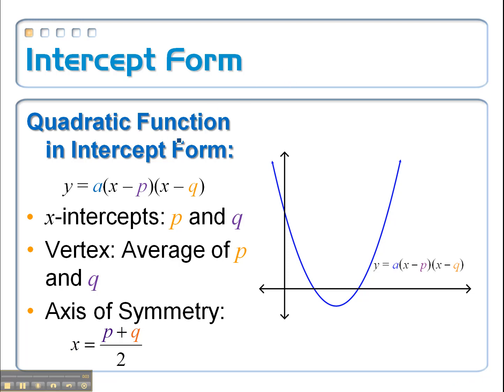Another form of a quadratic function is when it's in intercept form. So that looks like this: y equals a times x minus p times x minus q. And the p and the q, they're just numbers, any old numbers we want them to be.